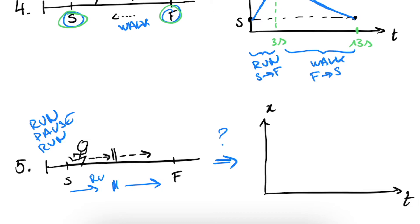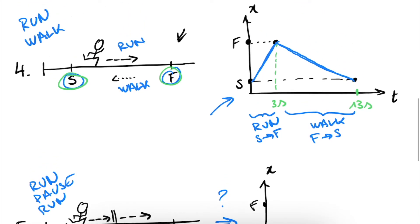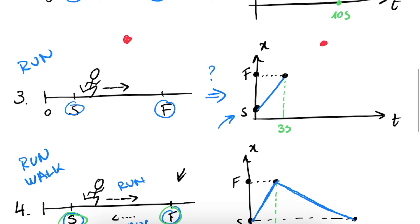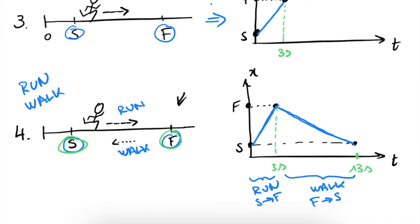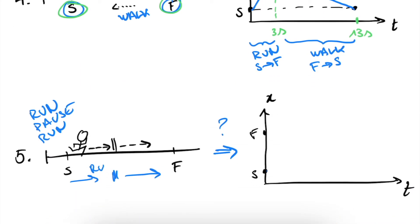So let's see how this goes. We have time here, we have X here. Again, our initial position is S, and this time our final position is F. So let's see, we first run halfway. And we know from this example and from this example that running corresponds to a steep slope. So we run halfway, which is here, and halfway between S and F is this point.